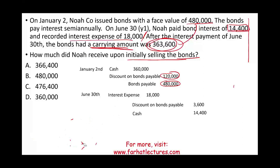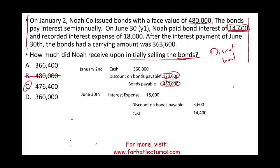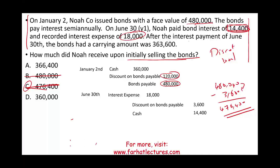Now, if this question was given as a multiple choice, it should take you 10 seconds. Based on the information given, I'm dealing with a discount bond, and a discount bond cannot be sold for the face value — it's sold for less. One answer choice is $476,400, which comes from taking $480,000 minus $3,600 (the one-period discount amortization). But that's not how much the bond was initially sold for — all that does is subtract one period's amortized discount from face value, which is a tricky but incorrect approach.